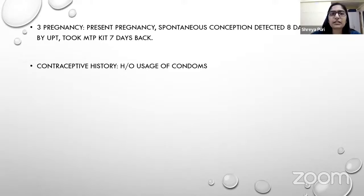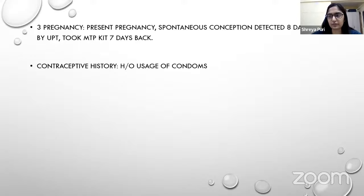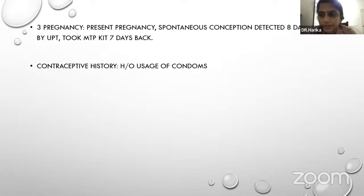The third pregnancy is the current pregnancy — spontaneous conception detected eight days back by urine pregnancy test, following which she took an MTP kit seven days back. Contraceptive history: the patient has not used any hormonal contraception.